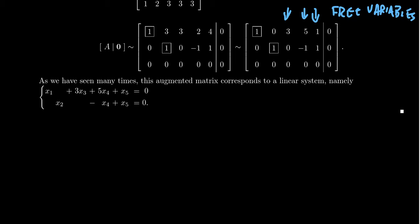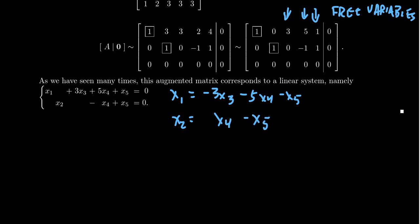So if we solve the dependent variables with respect to the free variables, we get that x1 equals negative 3x3 minus 5x4 minus x5. Notice that the coefficients of x3, x4, x5 change their signs as they move to that side of the equation. And then we also see that x2 equals x4 minus x5. So the coefficients of x4 and x5 changed sign when moved to that side. That's an important detail that will be helpful in a little bit.